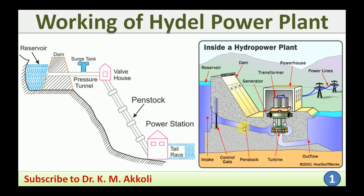At the entrance of the turbine, depending upon the type of turbine we are going to use, both pressure and kinetic energy may be converted into mechanical energy, or the kinetic energy is first converted using a nozzle and then into mechanical energy. That is how the energy conversion takes place, and for that certain arrangements are required.